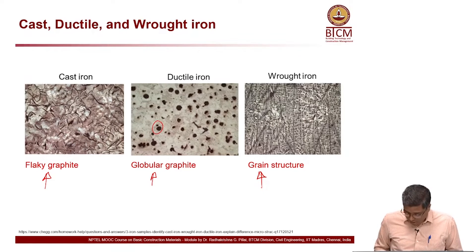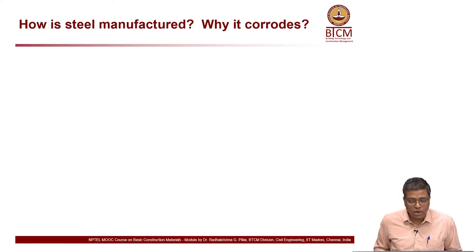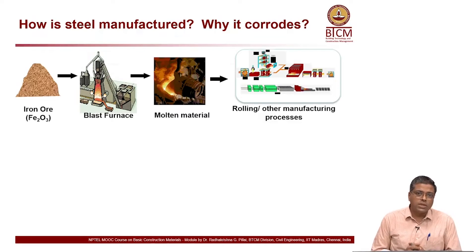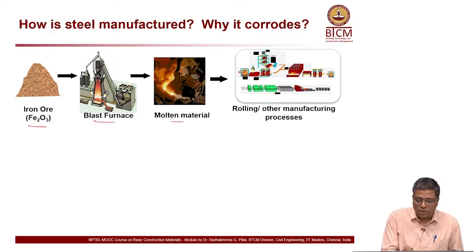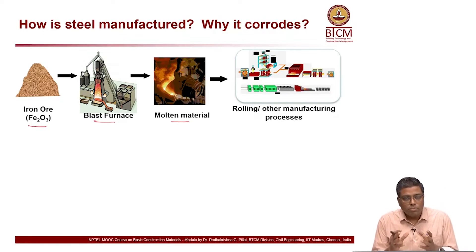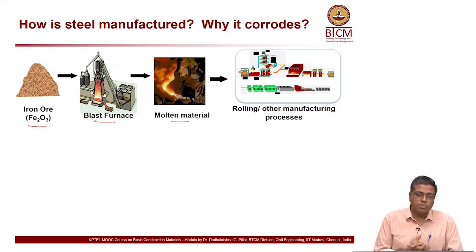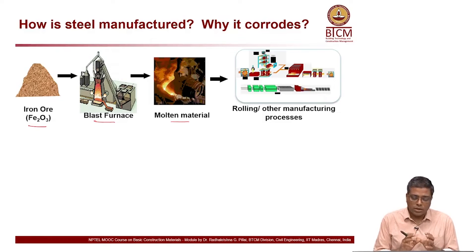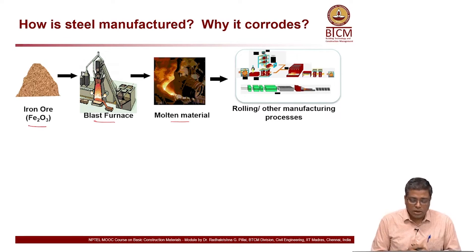Examples include the Eiffel Tower, the Statue of Liberty, and many other typical applications in buildings. Now let us look at steel — how steel is manufactured and also why it corrodes. Steel is produced similarly: from iron ore to the blast furnace to get molten material. Depending on the raw materials put in, you get a well-controlled composition of steel. Steel can have a lot of other elements present to address various properties — essentially when you talk about alloys, many elements come into the picture.